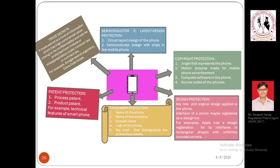Trademark is always associated with a brand or the product's company of origin. The name of the phone written on the back or front of the product is protected under trademark. Similarly, the logo of the company — for example, the Apple logo on the back of Apple phones. Even without writing the name 'Apple,' the logo clearly identifies the product as belonging to Apple company. Any mark on the phone that helps a buyer identify it as belonging to a particular company is protected as a trademark.